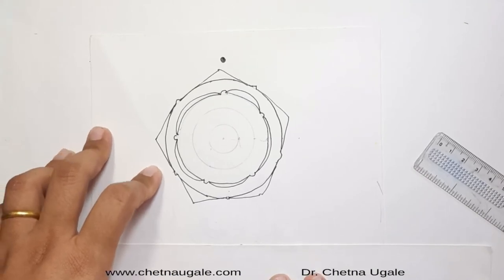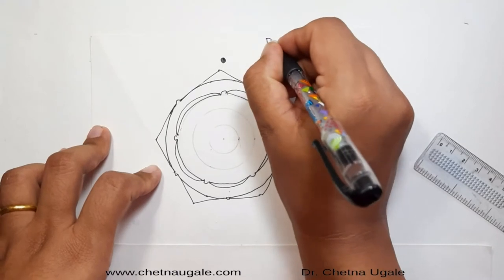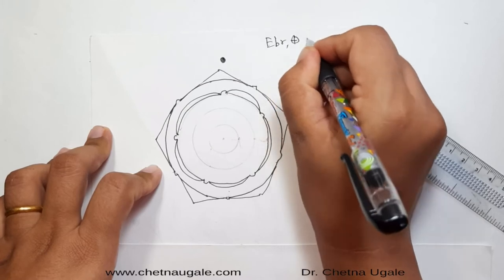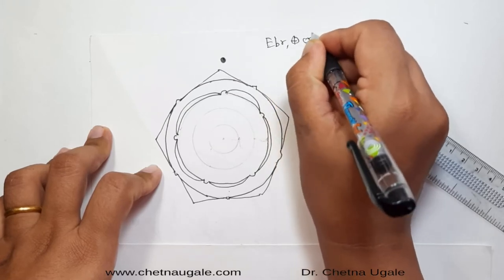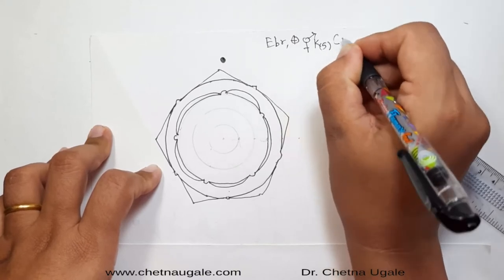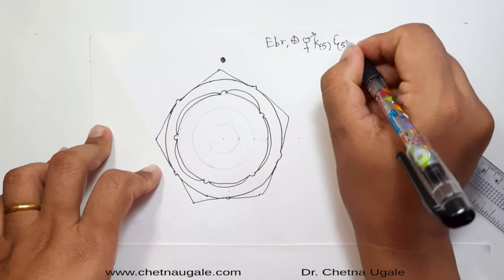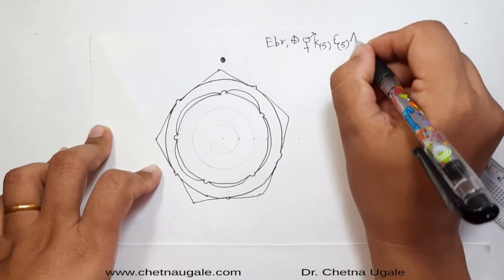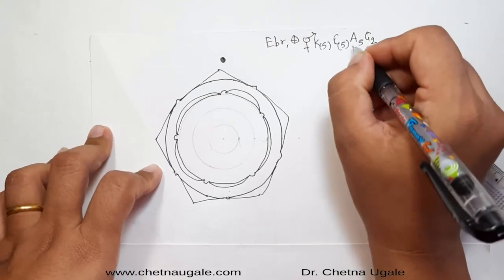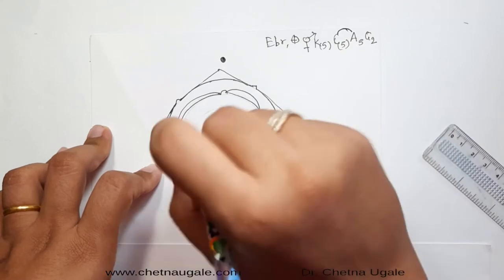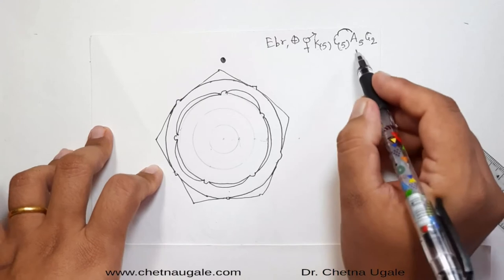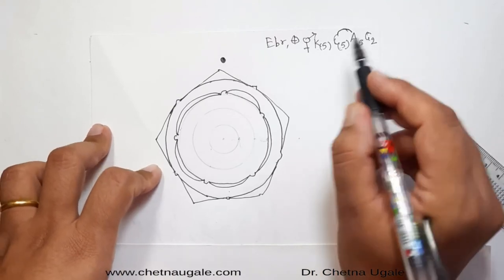In the previous video we already discussed the floral formula of the Solanaceae family: it is ebractate, actinomorphic symmetry, bisexual; calyx — sepals are five and gamosepalous; corolla — petals are five and gamopetalous; androecium — five and polyandrous condition; while the gynoecium is two, and in some members it is syncarpous and in some it is polycarpous.